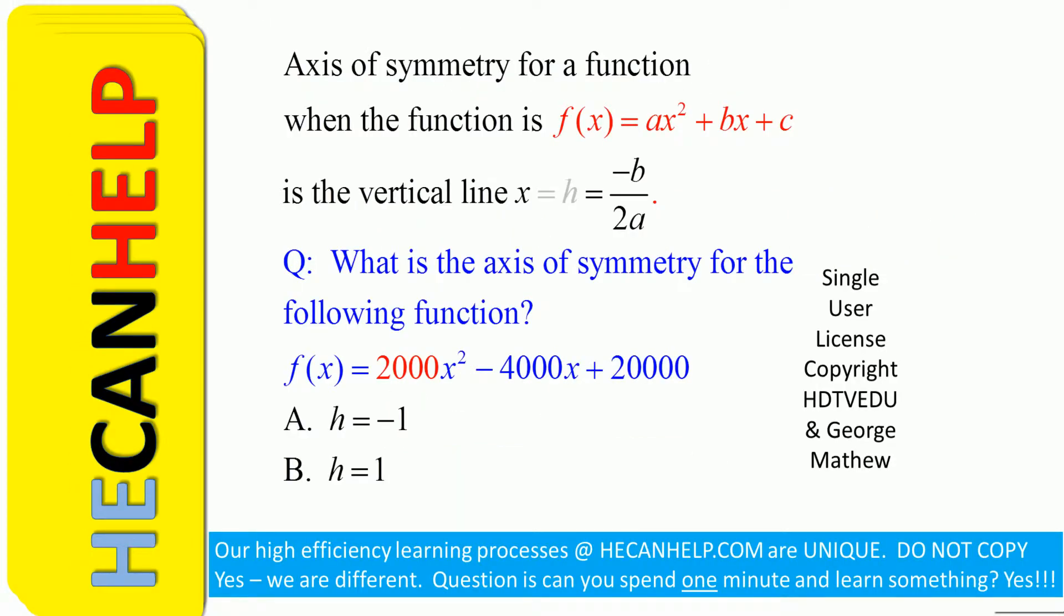Axis of symmetry for a function when the function is f of x equals ax squared plus bx plus c is the vertical line x equals h equals negative b over 2a.